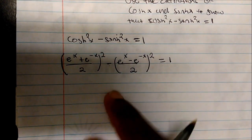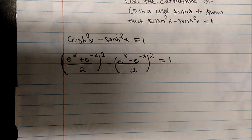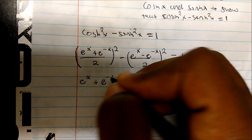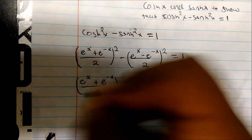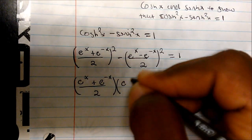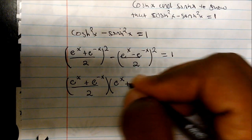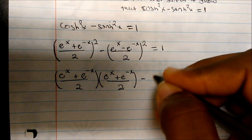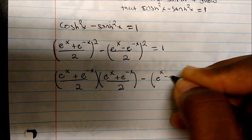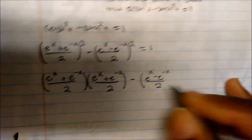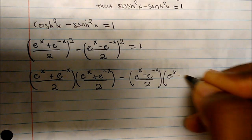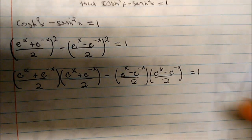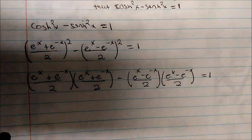Remember, if we're squaring these, all we're actually doing is multiplying each expression by itself. So we have e to the x plus e to the negative x divided by 2, times e to the x plus e to the negative x divided by 2, minus e to the x minus e to the negative x divided by 2 times e to the x minus e to the negative x divided by 2. And that is simply equal to 1.